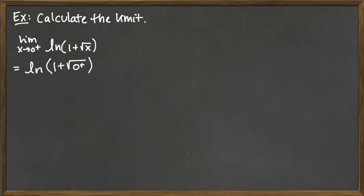So keep in mind 0 plus is an indicator for things slightly bigger than 0. And so if we take the square root of something slightly bigger than 0, we still have something slightly bigger than 0. So what we're really looking at here is the natural log of 1 plus a 0 plus.